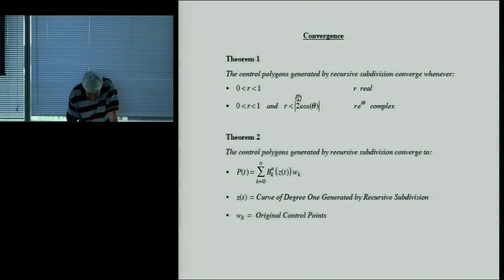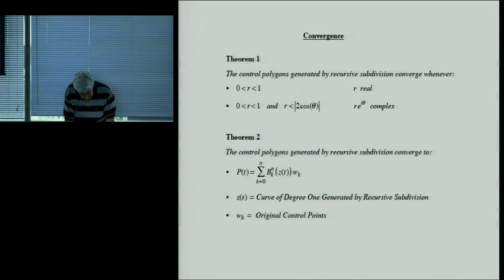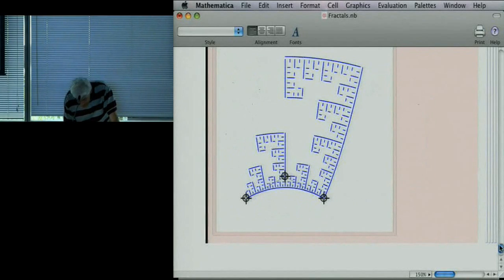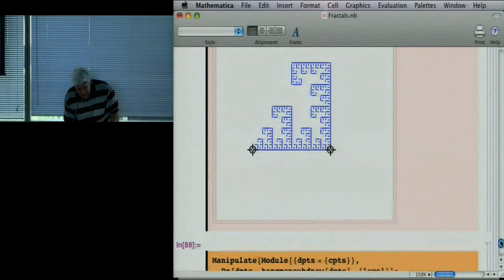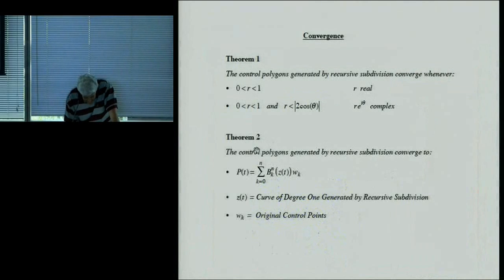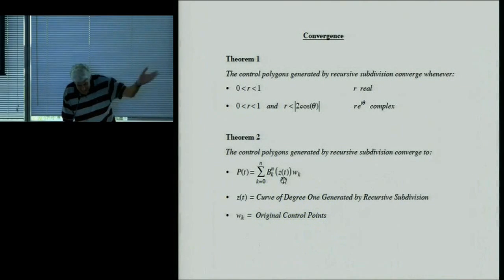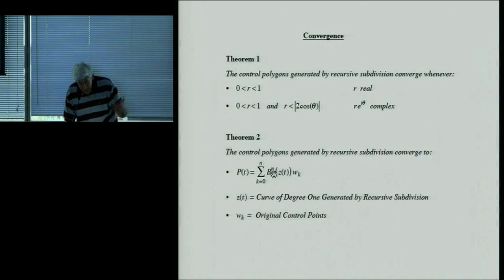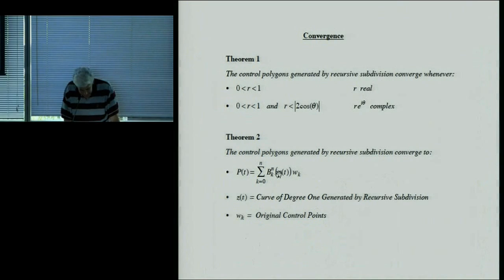We have convergence — and what do we converge to? The complex Bézier function I wrote down: for only two control points, z(t) is what you get by subdividing at the complex parameter. When you converge, you get an image of z(t) — you take your Bézier function in the complex domain, evaluate the Bernstein functions at z(t), and the new curve is a conformal warping of that. Since these are polynomials, you get conformal transformations of the complex plane — and polynomials are known to be conformal.